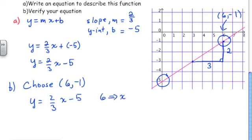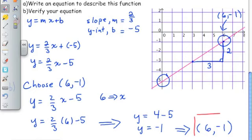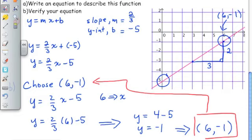I replace x with 6, so y = 2 thirds times 6 minus 5. I take 6, multiply it by 2 to get 12, and divide by 3 to get 4. So now I have 4 minus 5, and y = negative 1. When I substituted x = 6 into the equation, I got y = negative 1, and that matches the point I took from the graph, which verifies that my equation is correct.